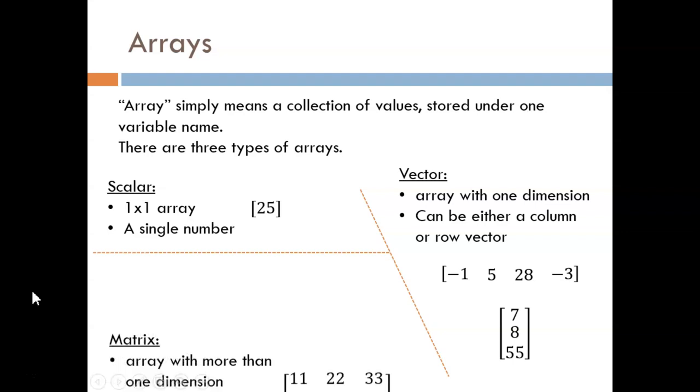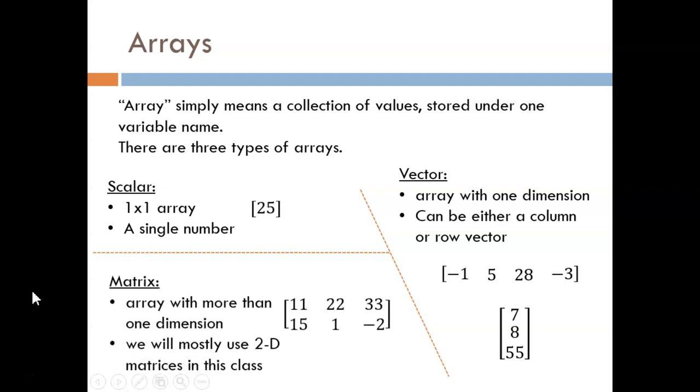Lastly, we have a matrix. This is an array with more than one dimension. Far and away, the most common matrix has two dimensions, meaning it has rows and columns, or that it looks like a table.